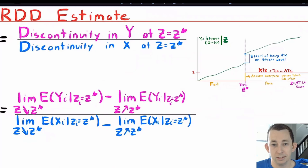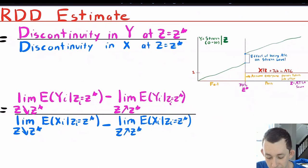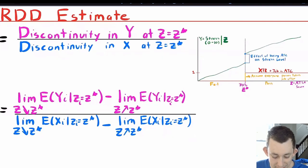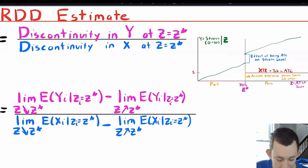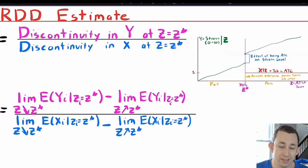To make that more mathematical: our RD estimate is the discontinuity in Y at the threshold divided by the discontinuity in X at the threshold — your change in Y over your change in X right at the 70 percent ATSA score. More formally, you can use limits: it's the limit of the expected value of Y as you approach the threshold from the right, minus the limit of the expected value of Y given Z as you approach from the left, divided by the same thing for X.